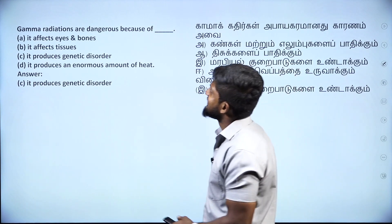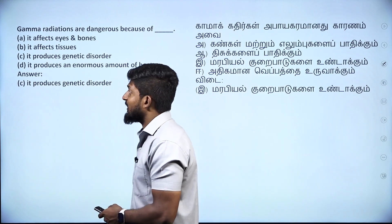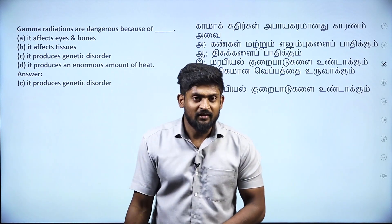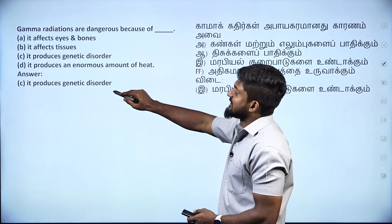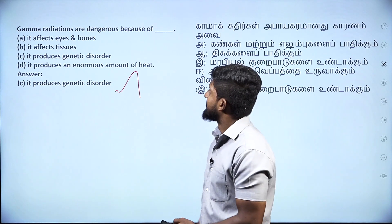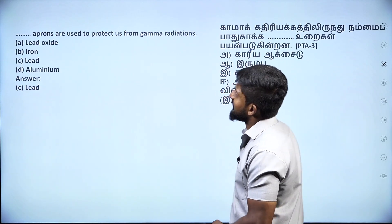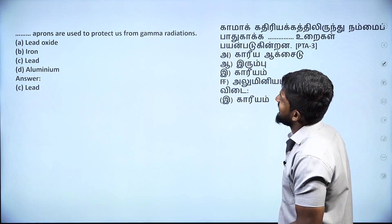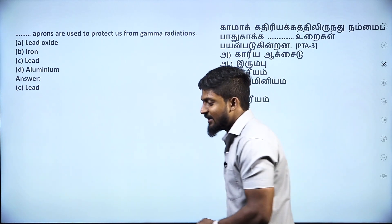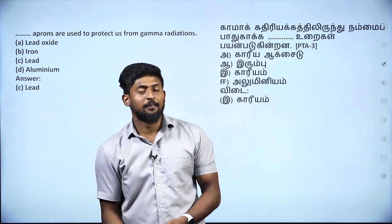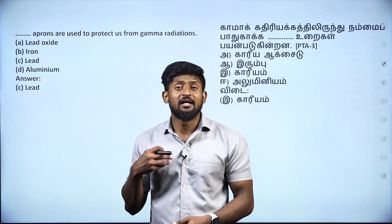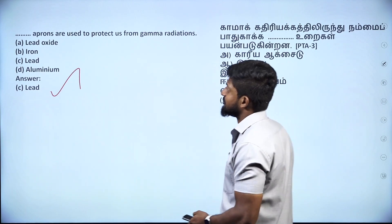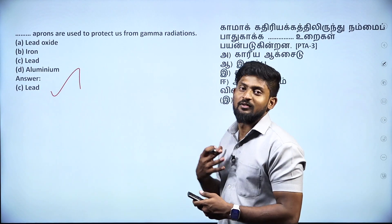Gamma radiations are dangerous because they produce genetic disorders. Lead aprons are used to protect us from gamma radiation — we use lead for protection.